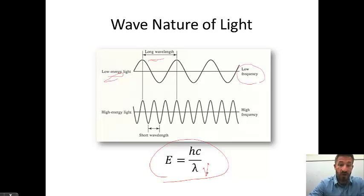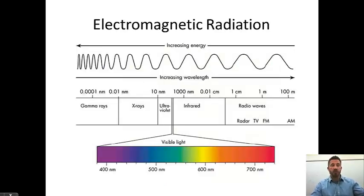You see that relationship expressed in this formula. If we have a very short wavelength, we will have a very high energy. So a wave has two characteristics: one is frequency, and the other is wavelength. Let's relate this wave to the electromagnetic radiation.